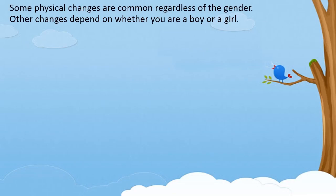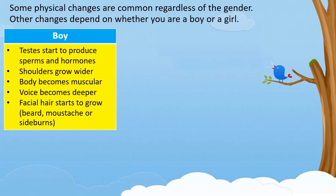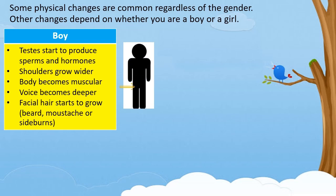Some physical changes are common regardless of gender, while others depend on whether you are a boy or a girl. For boys: testes start to produce sperm and hormones, shoulders grow wider, body becomes muscular, voice becomes deeper, and facial hair starts to grow. The hormones travel through the blood to the testes — the two egg-shaped glands in the scrotum — to begin making testosterone and sperm. Testosterone is the hormone that causes most of the changes in a boy's body during puberty, and men need sperm to reproduce.